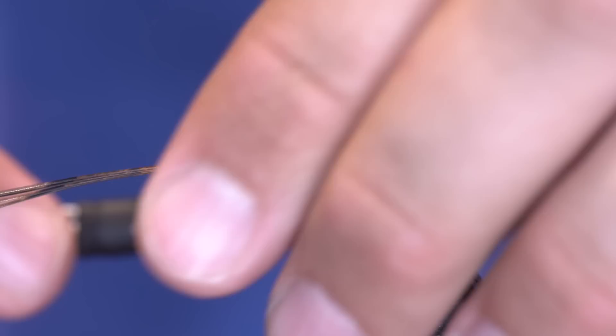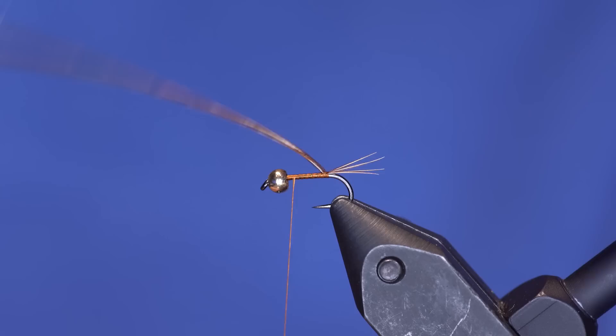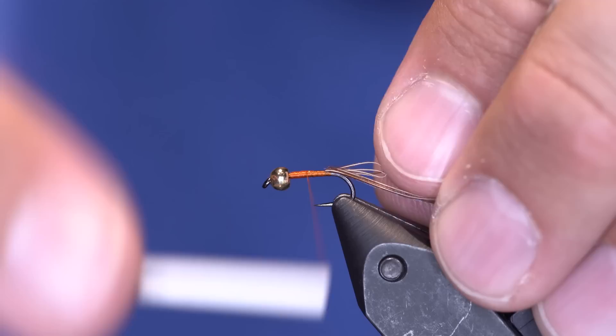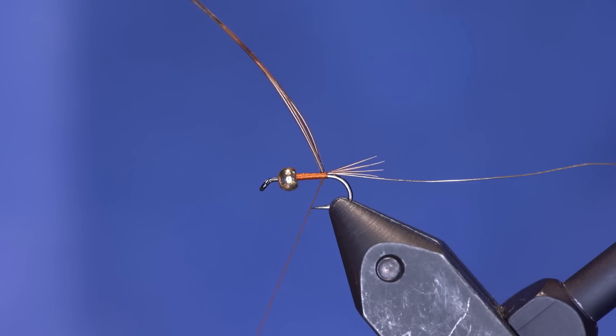Tie in some small wire. So since I'm using a gold bead I'll use gold wire and take that back. Build up a little bit of a taper but not too much. And I'm going to do one final wrap behind the pheasant tail.